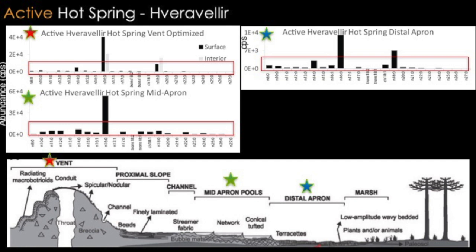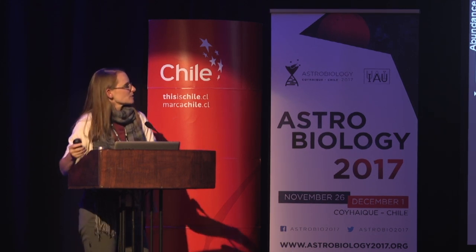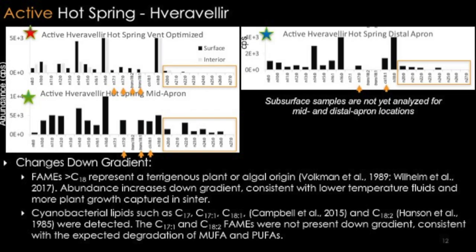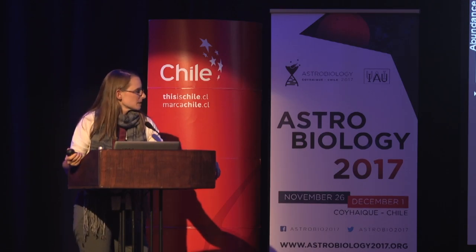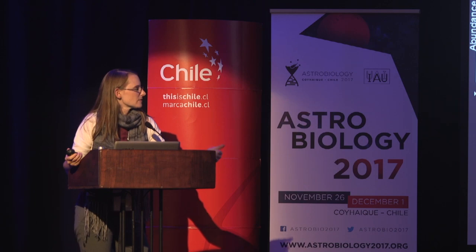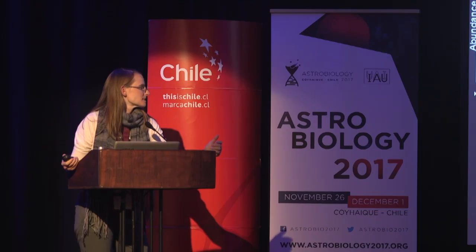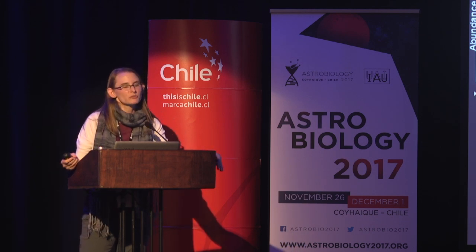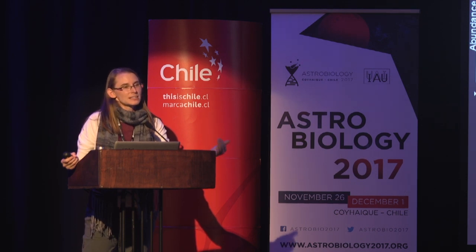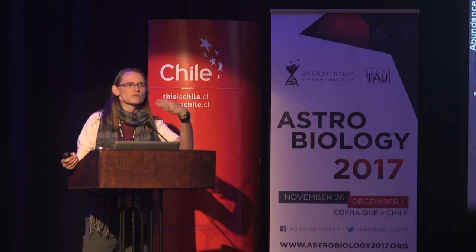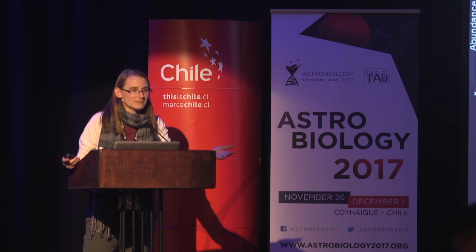We want to look at changes downgradient and changes with depth. Moving from the vent to the mid-apron and then to the distal apron, we find the proportion of FAMEs longer than 18 carbons — those representing terriginous plant or algal origins — increases as we move downgradient, consistent with lower temperature fluids and more plant growth away from the vent. We also identified lipids often associated with cyanobacteria: C17, C17:1, C18:1, and C18:2, detected across systems but dropping off downgradient. The absence of C17:1 and C18:2 FAMEs downgradient is consistent with expected degradation of MUFAs and PUFAs.